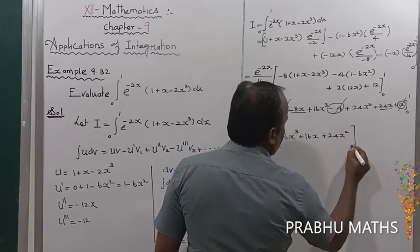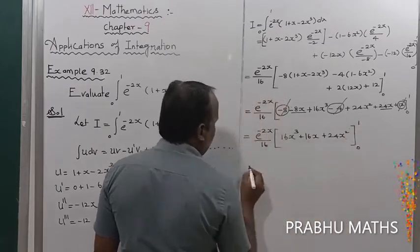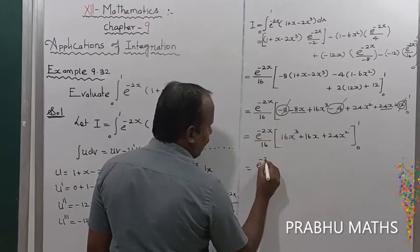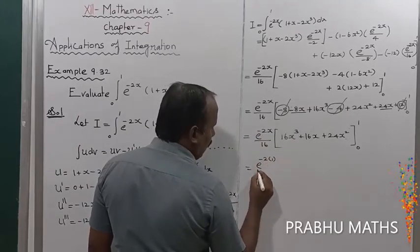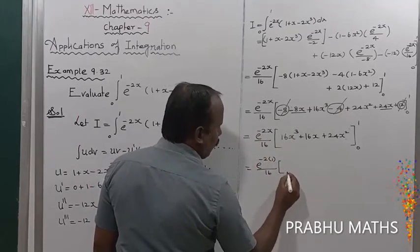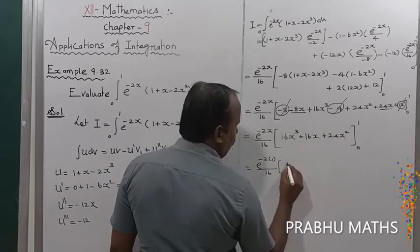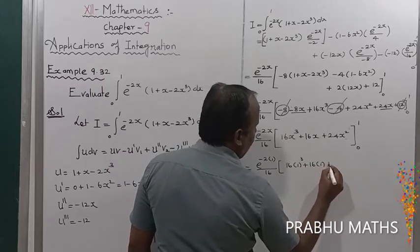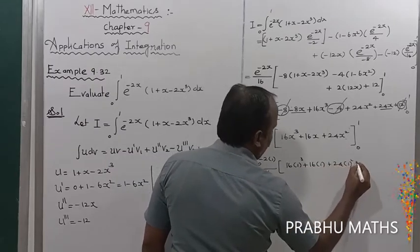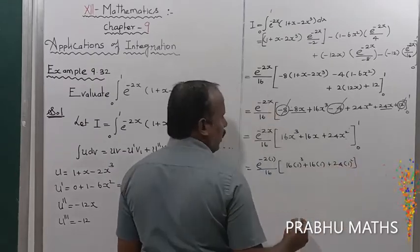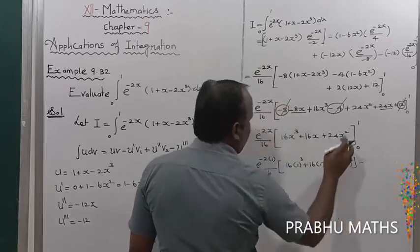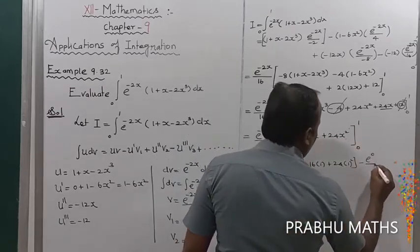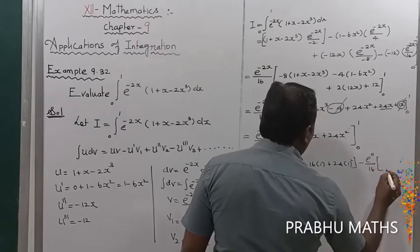Applying the limits: upper limit is 1, lower limit is 0. At x = 1: e^(-2·1)/16 · (16·1³ + 24·1²) = e^(-2)/16 · (16 + 24). At x = 0: e^0/16 · (0) = 0.